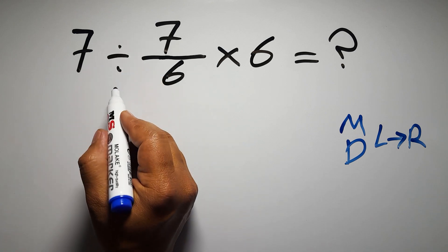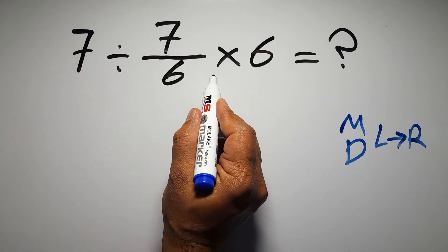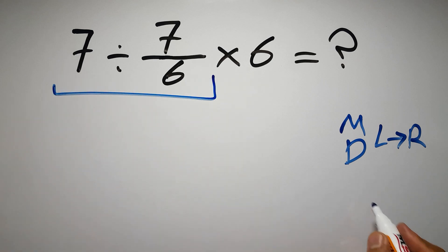So first, this division: 7 divided by 7 over 6. According to the KCF rule...